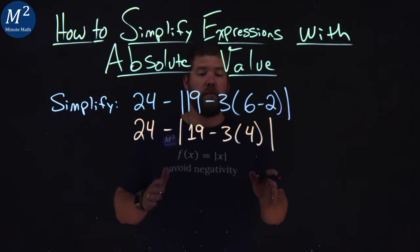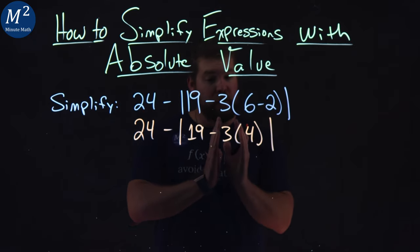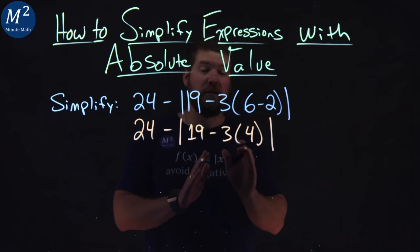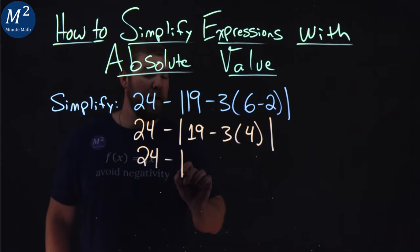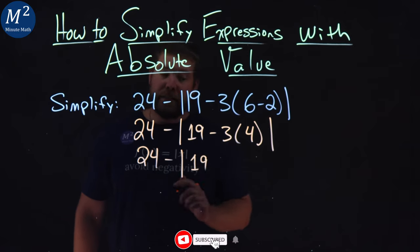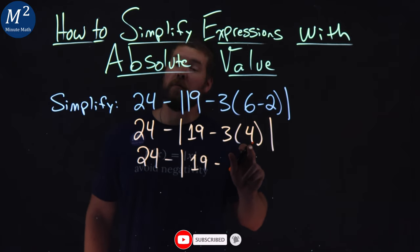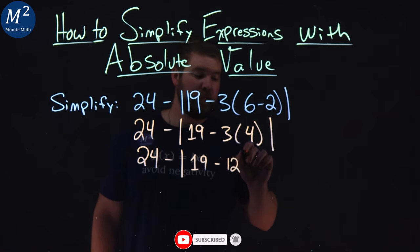Order of operations, we have to again deal with inside the absolute value, and then from there, multiplication comes first. So 24 stays on the outside, minus absolute value. 19 stays there, minus 3 times 4, which is 12.